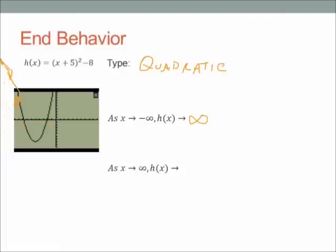Conversely, if I am way out on the right-hand side of the graph — as x approaches infinity, x values getting bigger and bigger — if I could stand way out to the right on the x-axis, would I have to look up, look down, or is the graph getting close to a number? I can't see any of the middle; all I can see is the end going up. I would have to look up to see the graph way up there. So as x gets bigger, y gets bigger — y approaches infinity.